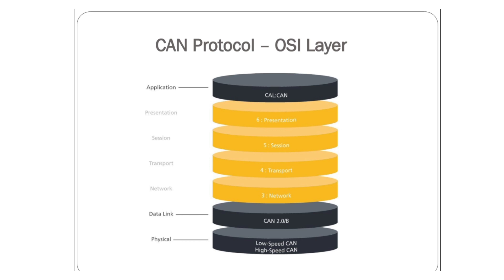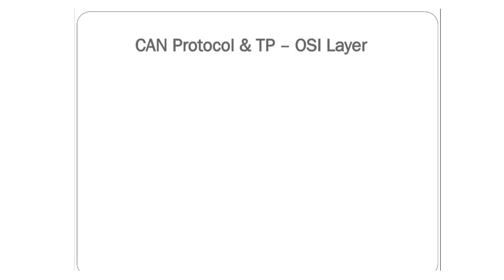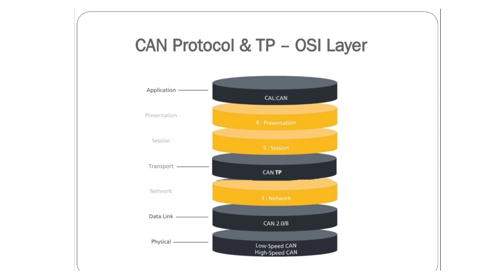In the application layer it is CALCAN. If you are working with core CAN protocol, you will only use the physical and data link layers. If you go for CALCAN, you consider the application layer as well. CANTP occupies the transport layer, which is the fourth layer — that is the main difference and relation between CAN protocol and CANTP in OSI layers.